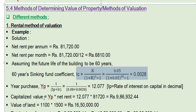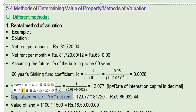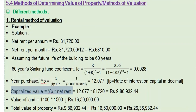The capitalized value equals years purchase multiplied by net income (net rent). Using the rental method of valuation: capitalized value = YP (12.077) × net rent. The resulting capitalized value — the present value of the property — is rupees 9,86,932.44, approximately 9,86,932 rupees.